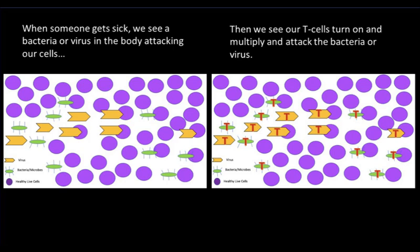When someone gets sick, this is what we see: a bacteria or virus or parasite in the body attacking our cells, and then our T-cells turn on and multiply and attack the bacteria or virus to shut it down.